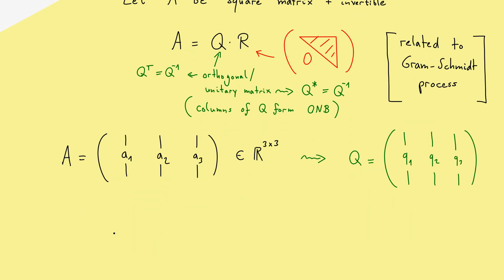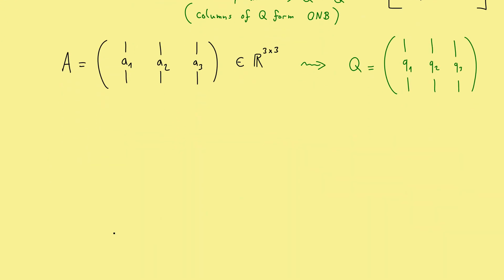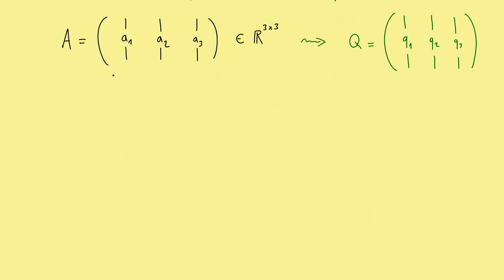Because all these columns should have length 1, we start by normalizing the first vector here. This gives us now the definition for Q1, which should be our vector A1 divided by the length of the vector, so the norm of A1. So you see calculating Q1 is always easy, but for Q2 we have to do a little bit more.